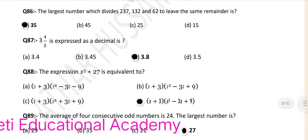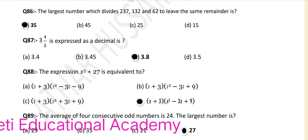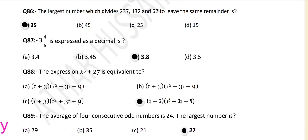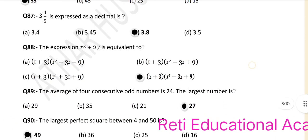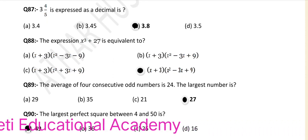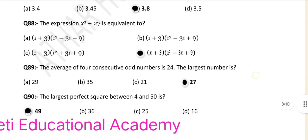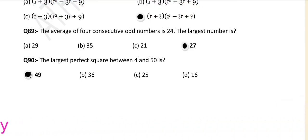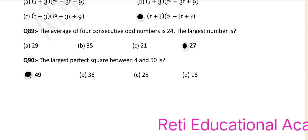Question number 87: Three and four upon five expressed as a decimal is 3.8. Question number 88: The expression x cubed plus 27 is equivalent to D. Question number 89: The average of 4 consecutive odd numbers is 24; the largest number is 27. Question number 90: The largest perfect square between 4 and 50 is 49.